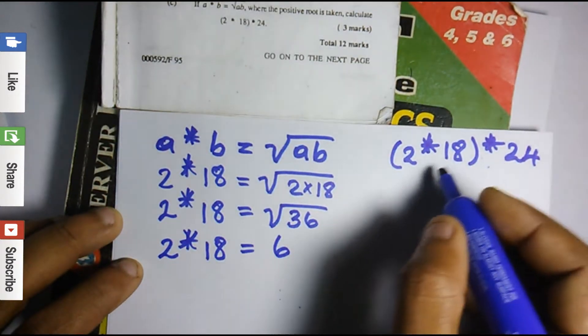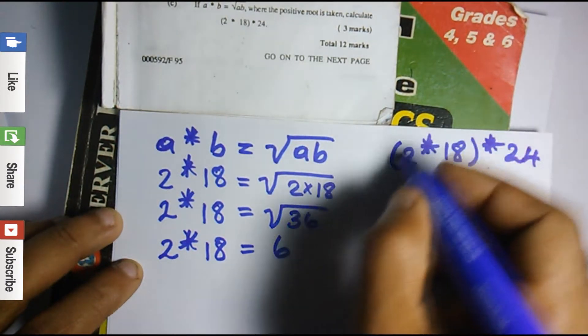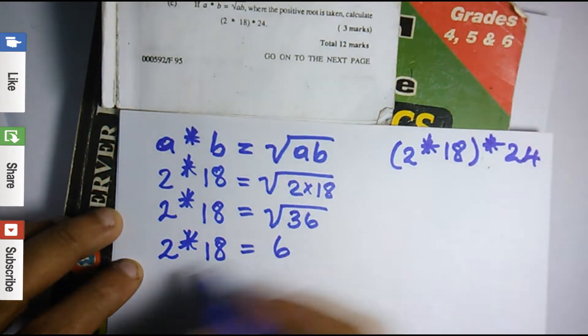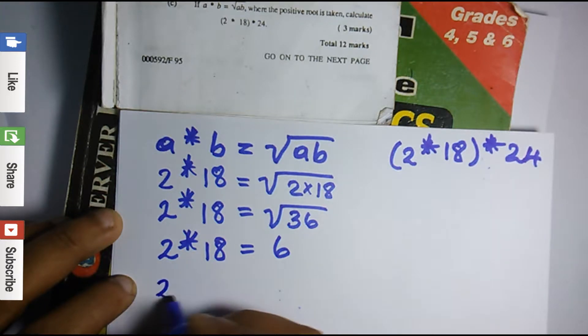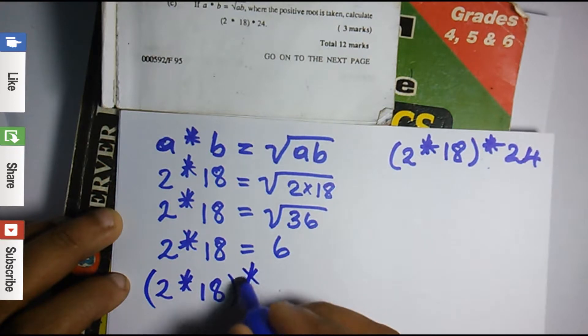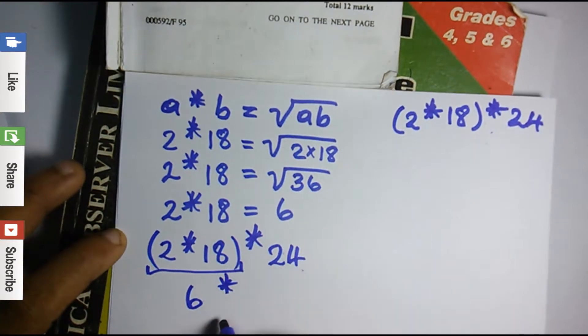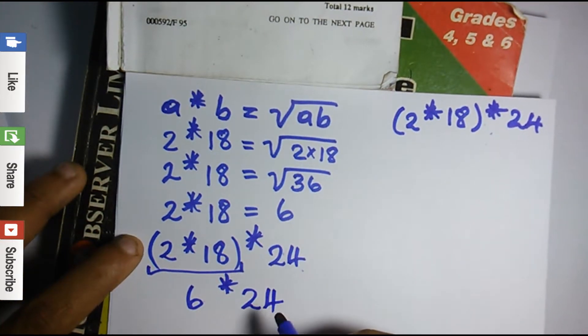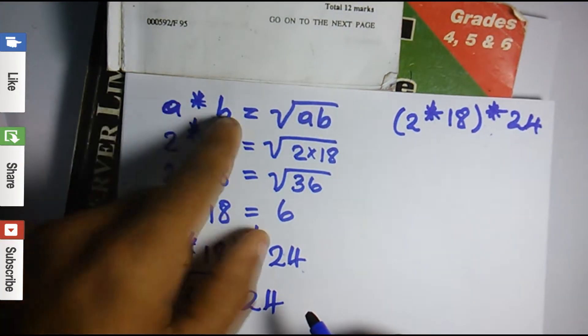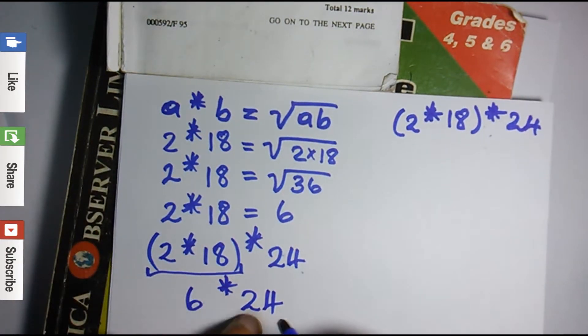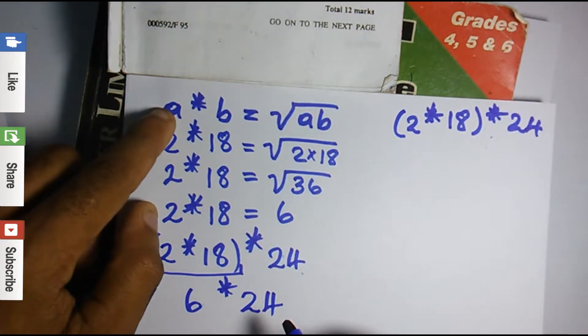So we still need to solve for whatever 2 asterisk 18 is, asterisk 24. So 2 asterisk 18 in brackets asterisk 24. Now 2 asterisk 18 is 6, so replace it with 6, write the asterisk, right power only 24. So we're going to use the same system to solve the 6 asterisk 24.